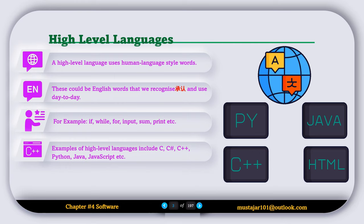Examples of high-level languages include C, C-sharp, C++, Python, Java, JavaScript, etc.